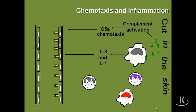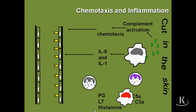You also have mast cells within the skin. The C5A protein as well as C3A — both complement proteins — act as what we call anaphylatoxins. C5A and C3A can cause degranulation of mast cells without IgE. When you get degranulation, initially you're going to get histamine, followed by your prostaglandins and leukotrienes. Histamines, prostaglandins, and leukotrienes increase vasodilation and vascular permeability, promoting an inflammatory response.